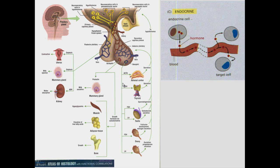Each of those cell types produces hormones that affect a target organ — the testis, thyroid, via ACTH the adrenal, the mammary gland, or all tissues in general through growth hormone. These feed back into the pituitary or hypothalamus. In the posterior pituitary, the pars nervosa, neurons located in the hypothalamus project down into this region and themselves produce the hormones oxytocin and ADH.